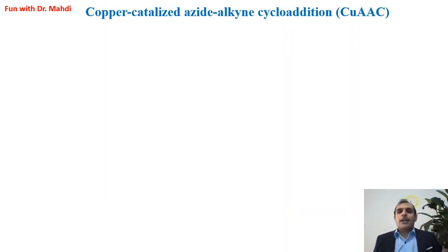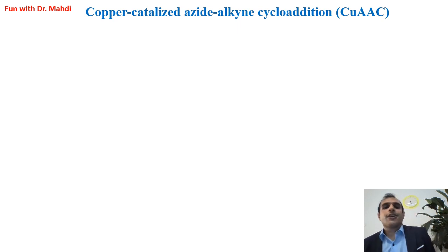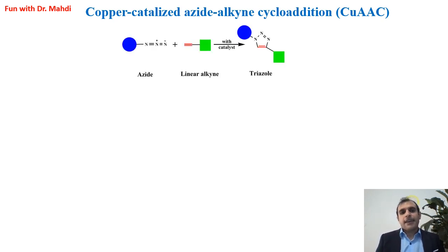There are many types of click reaction, but here in this video, I'm going to explain the most important ones. I would like to start with the most popular type: copper-catalyzed azide-alkyne cycloaddition, or CuAAC. It's a reaction between azide and a linear alkyne in the presence of copper as a catalyst.